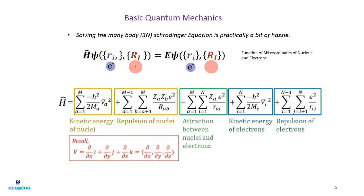A bit about quantum mechanics: the Schrödinger equation is H·ψ = E·ψ, where ψ is a function of 3N coordinates of nuclei and electrons. If we know the exact ψ and operate using the Hamiltonian, it will give an energy corresponding to that state. The full Hamiltonian contains kinetic energy of nuclei, repulsion of nuclei, attraction between nuclei and electrons, kinetic energy of electrons, and repulsion of electrons. The exact solution of this five-term Schrödinger equation is impossible, so approximations must be introduced. Negative sign terms indicate attraction while positive sign terms indicate repulsions.